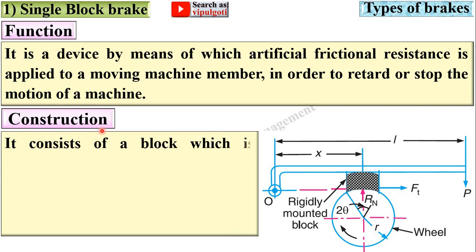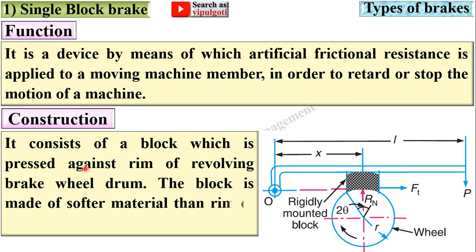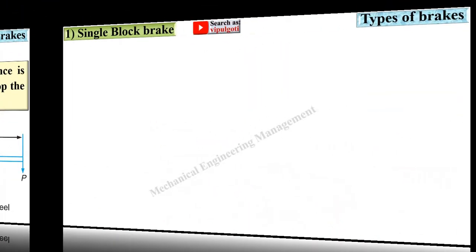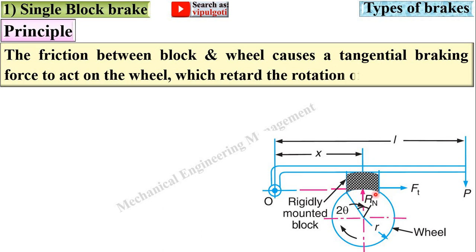Construction: it consists of a block which is pressed against the rim of a revolving brake wheel or drum. The block is made of softer material than the rim of the wheel because it is easier to replace the block. Principle: the friction between block and wheel produces a tangential braking force to act on the wheel, which retards the rotation of the wheel.